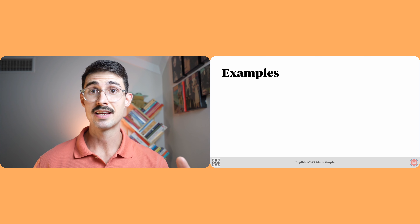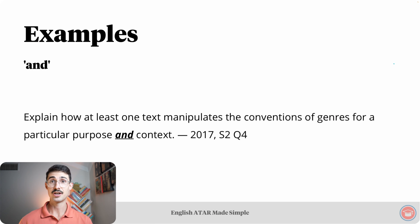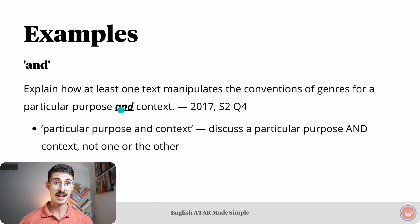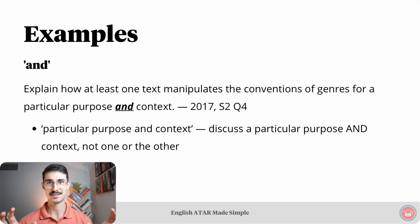Let's look at some relevant WACE exam questions, starting with examples that have the word 'and.' First example: 'Explain how at least one text manipulates the conventions of genres for a particular purpose and context.' The phrase 'particular purpose and context' means you need to discuss both a particular purpose and a particular context — not one or the other. You wouldn't be answering this question properly if you just discussed one particular purpose or one particular context. You need to discuss both.